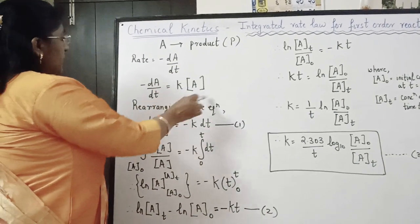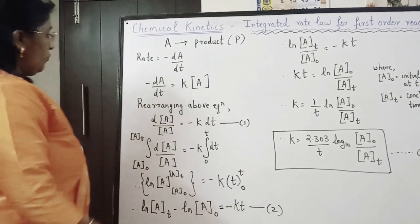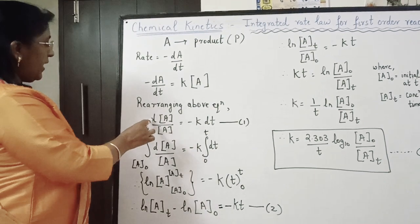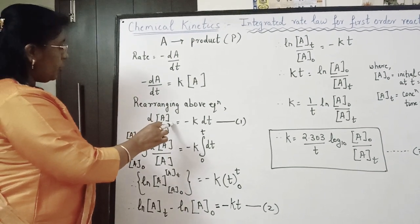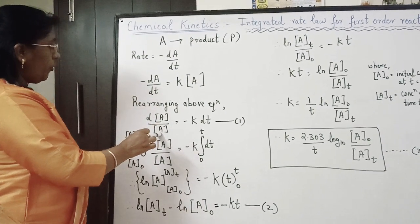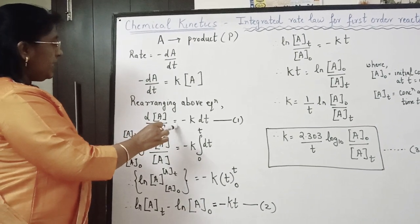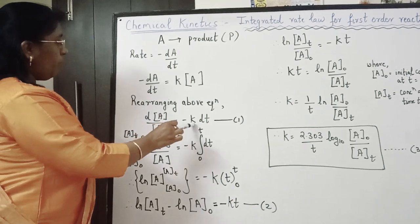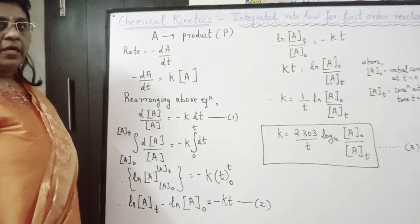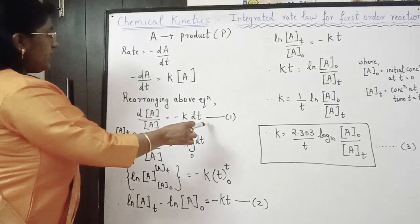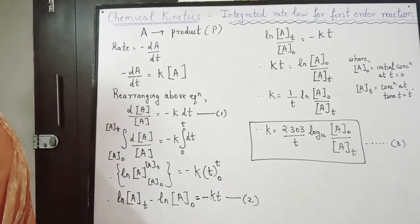Rearranging this equation, we can write: d[A]/[A] = -K dt. Let us call this equation number 1.